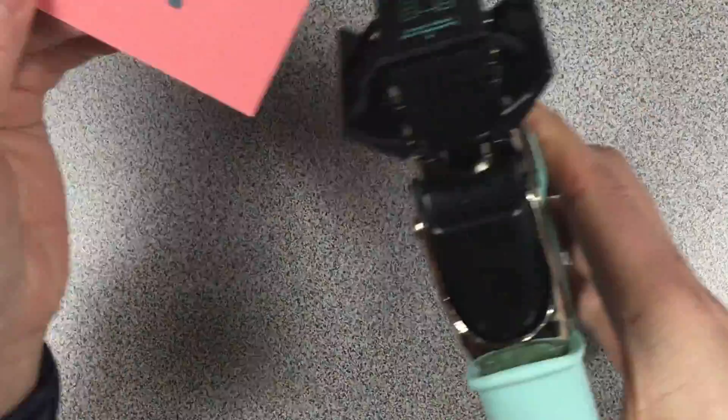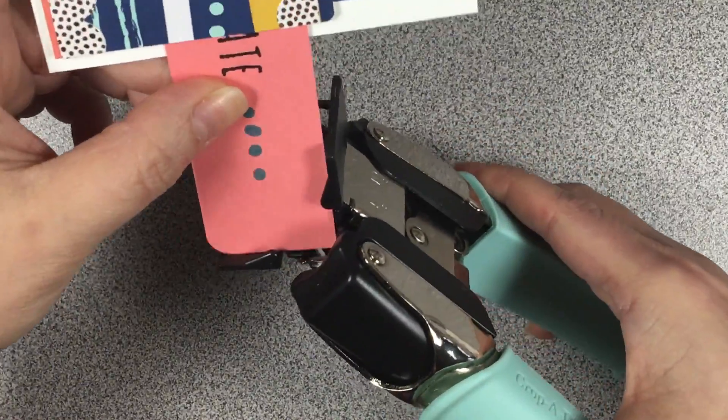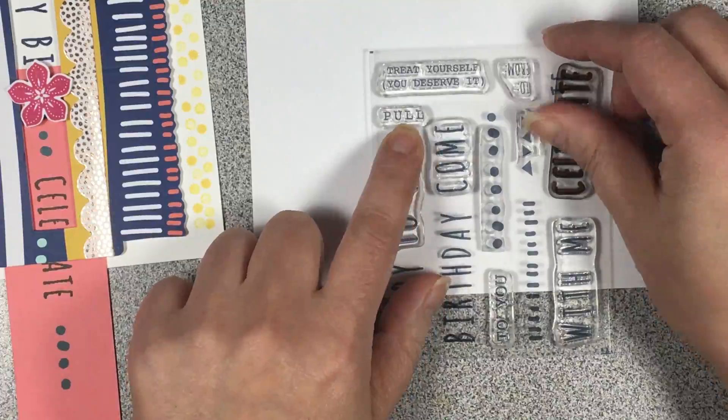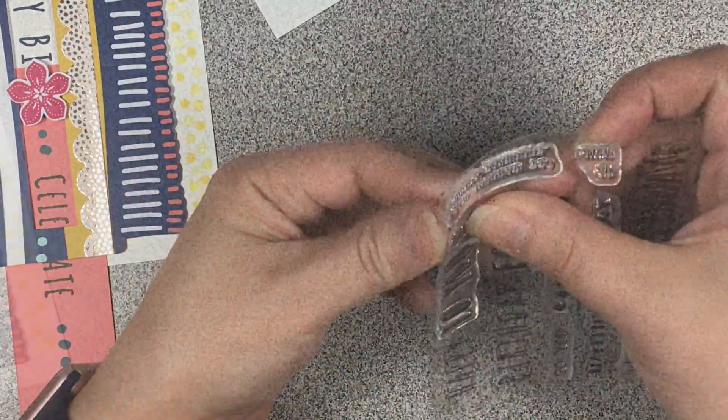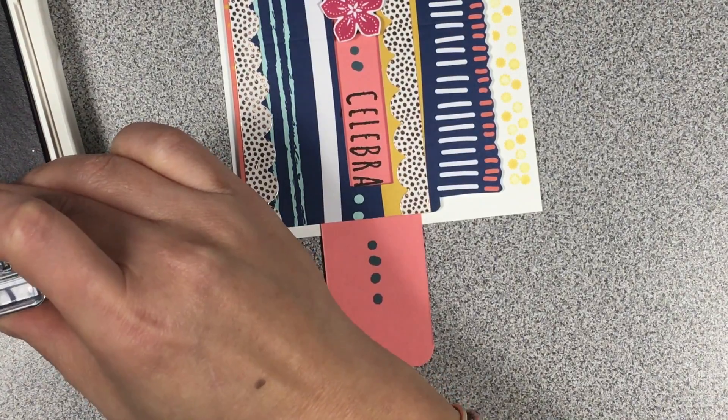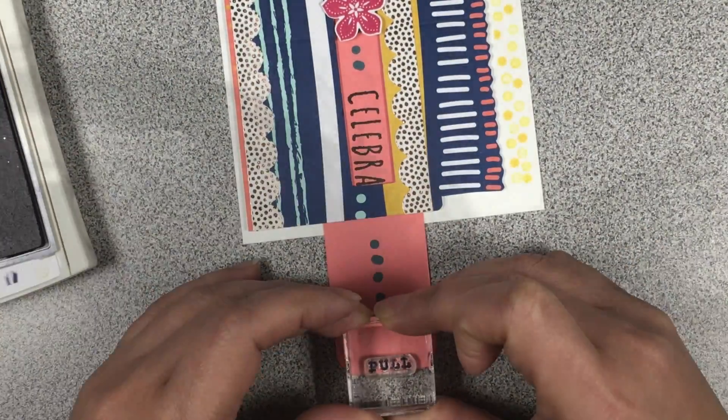With your corner chomper, I cut it at the quarter inch mark. The stamp set that has the word 'pull' on it, we're going to use that at the end there, and I stamped that with Night of Navy.